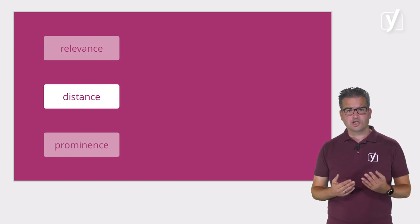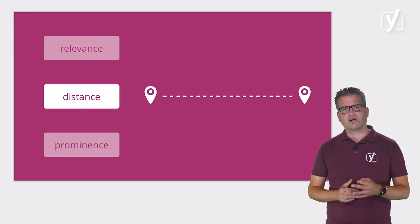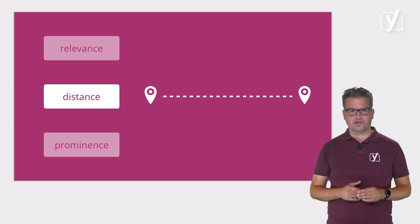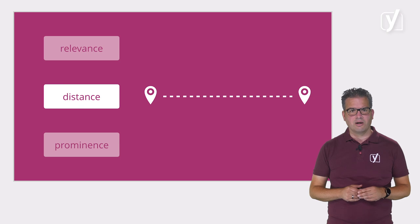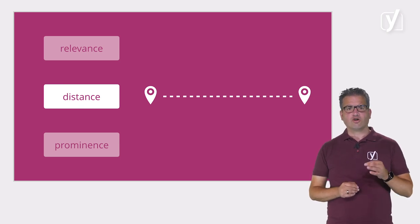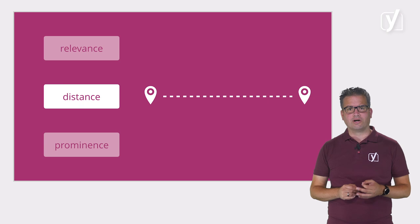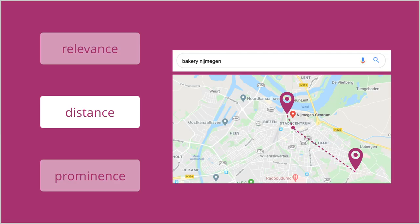The second factor, distance, is pretty straightforward — how far is the search result from the location used in a search? This could be the location someone uses in their search query, but if that's not specified, Google will calculate the distance based on what they know about someone's location. When someone does specify the location, Google usually picks the geographical center of that location. For example, when searching for 'bakery in Nijmegen,' a Dutch city close to the Yoast offices, Google would rank bakeries close to the geographical center of Nijmegen higher in the search results.